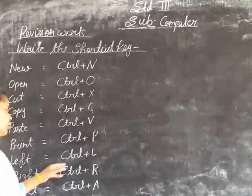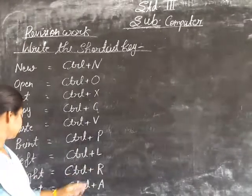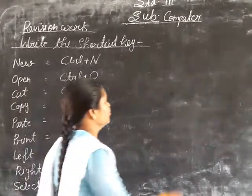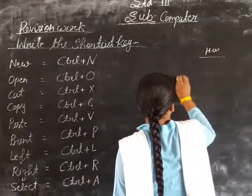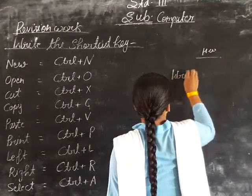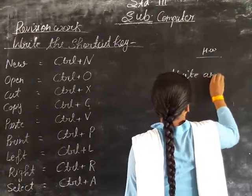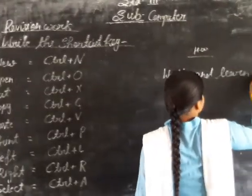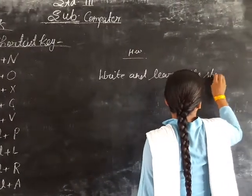Left: Control+L. Write: Control+R. Slap: Control+A. Open, write and learn the shortcuts.